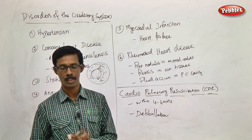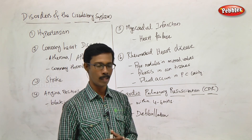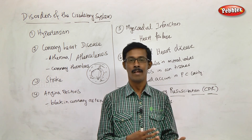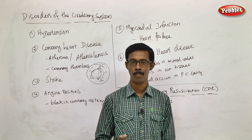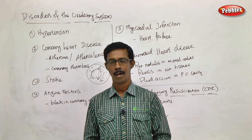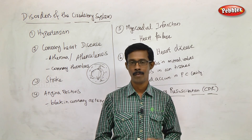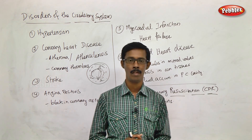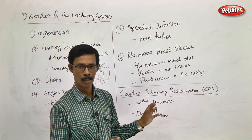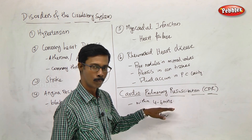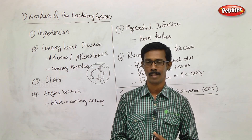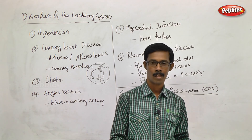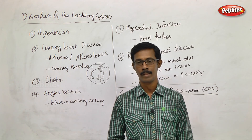CPR must be performed within 4 to 6 minutes of the shock or cardiac arrest. If there is a delay, because the oxygen supply to the brain is cut off, the brain cells begin to die immediately. The point is that CPR must be performed within 4 to 6 minutes. Along with defibrillation, the patient must be treated immediately. Once revived within 4 to 5 minutes, the patient can return to normal activities.